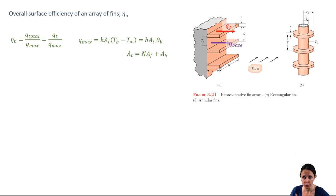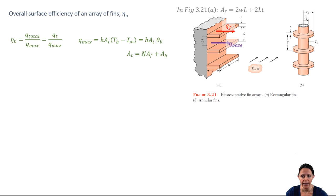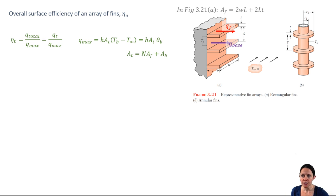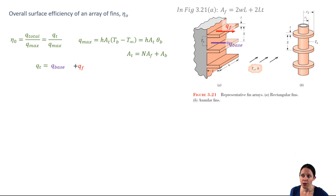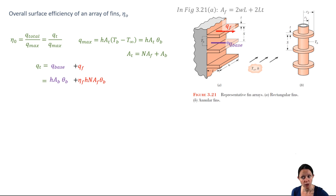For the rectangular fins in Figure 3.21, the total surface area is defined in terms of n, the number of fins. The first term accounts for the area on the top, bottom, and sides — note that the tip area is not included here because that is accounted for in the total base area. The total heat transfer rate is the sum of the heat transfer from the base and the heat transfer from the fins themselves. The base heat transfer is defined by Newton's law of cooling, and the fin heat transfer is expressed in terms of fin efficiency, with inclusion of n, the number of fins.